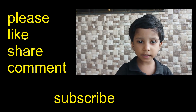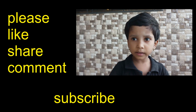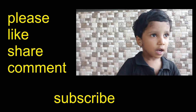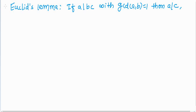We will prove Euclid's Lemma. The statement is very simple: if a is a divisor of bc, with the greatest common divisor of a and b equal to 1, then a is a divisor of c. The proof is very simple.